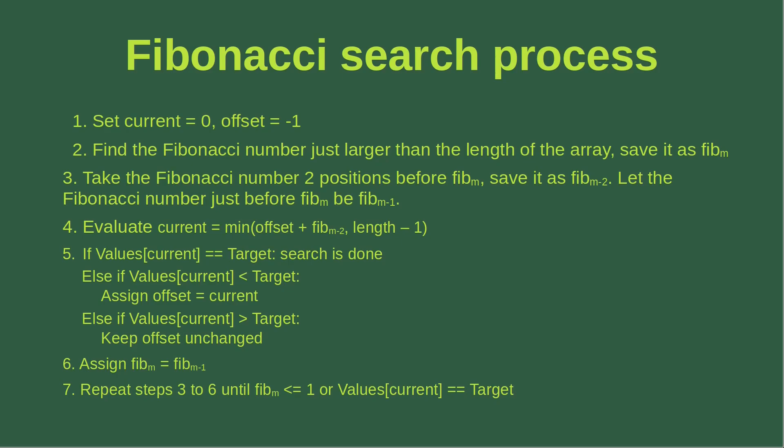There are seven steps involved in general. First, we have to set up two indices. One is called current, which is equal to 0, and the other one is called offset, which is equal to 1. The next step is to find out a Fibonacci number that is just larger than the length of the array to be searched for. And then I save that particular Fibonacci number as Fibonacci M.